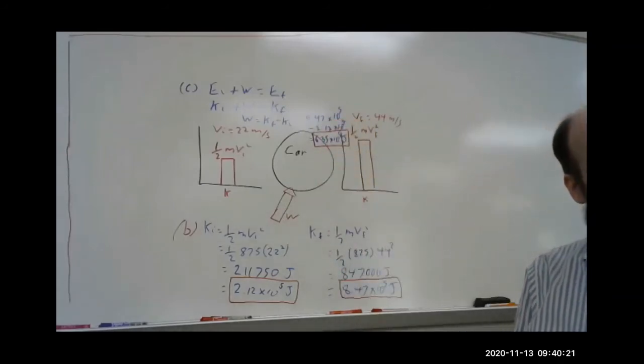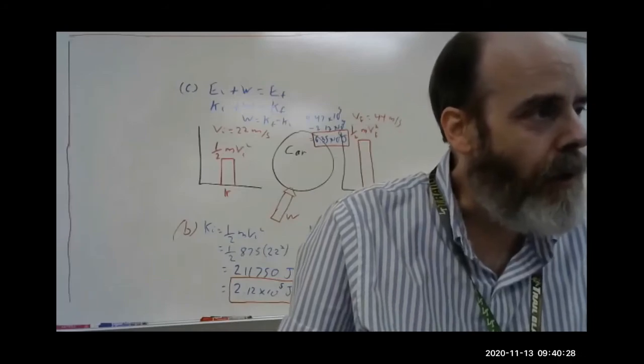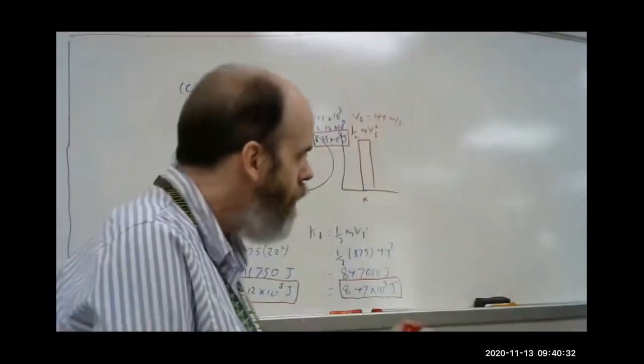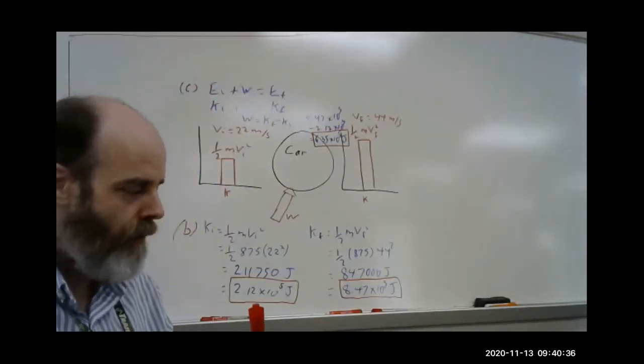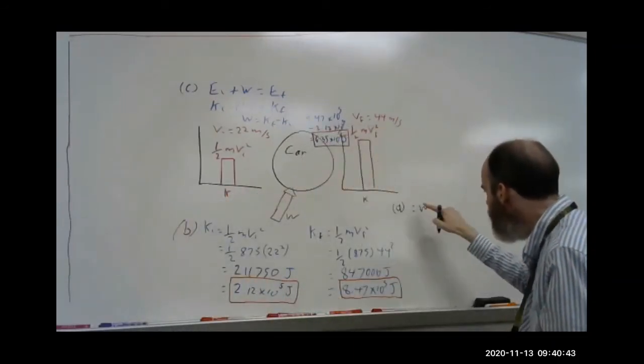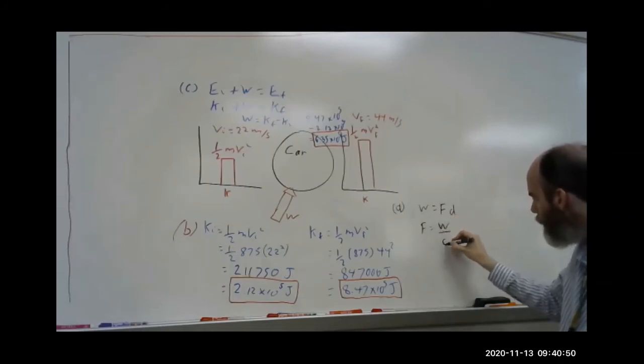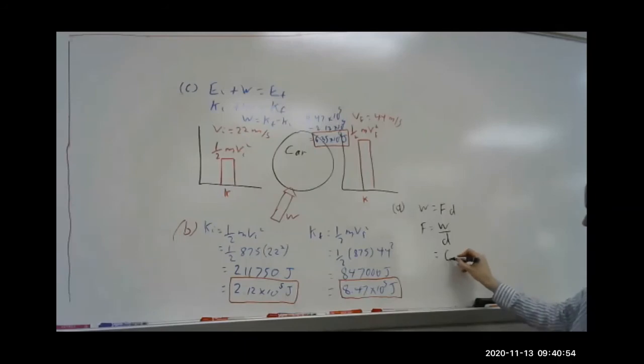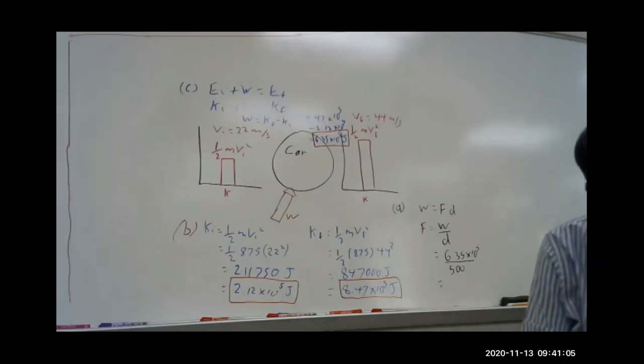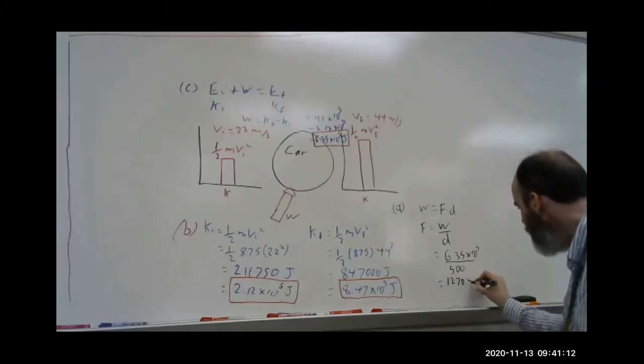Now it says, if the driver accomplishes this acceleration in a distance of 500 meters, what force does the engine need to apply to the car? So work is force times distance. Part D. Work equals force times distance. So force equals work over distance. So our work is 6.35 times 10 to the 5th over 500 meters.